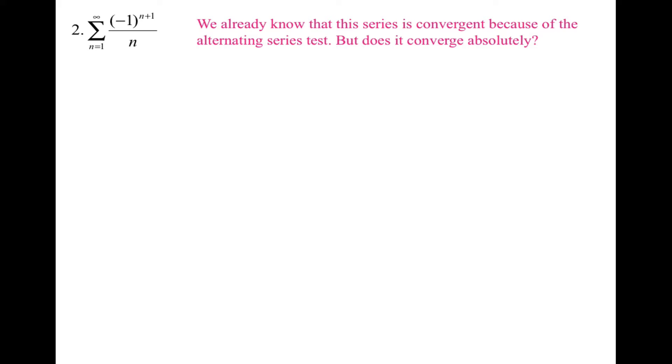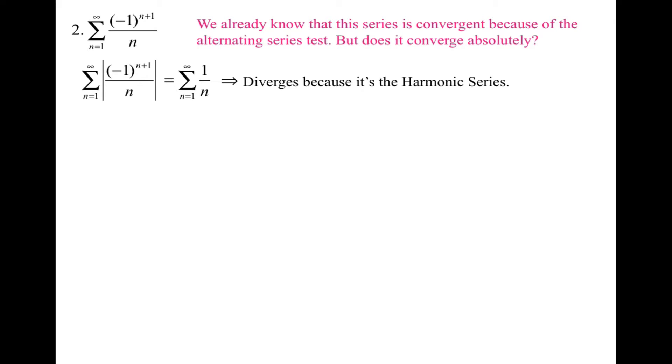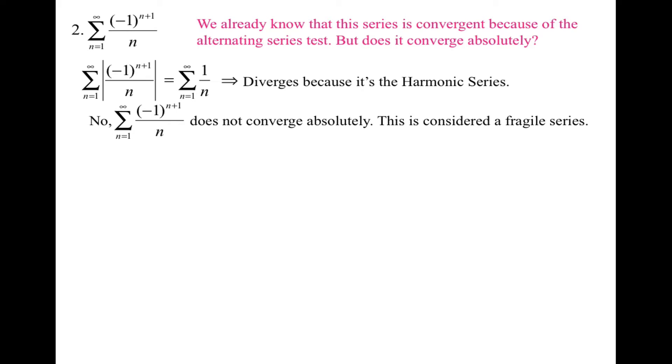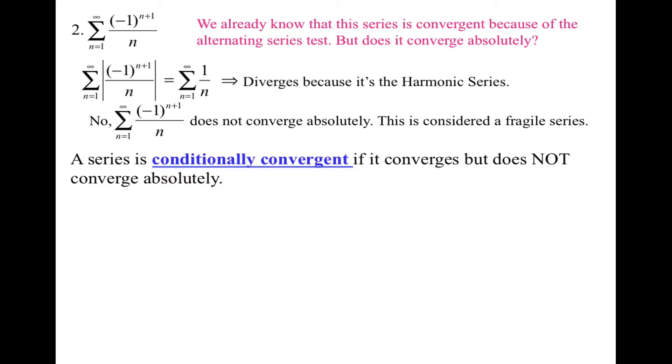Now if we look at the alternating harmonic series, which we already know is convergent, does it converge absolutely? If I take the absolute value of the alternating harmonic series, I would just get the harmonic series. But we know that the harmonic series diverges. So the alternating harmonic series does not converge absolutely. When that happens, it's considered a fragile series. A series is conditionally convergent if it converges but does not converge absolutely.